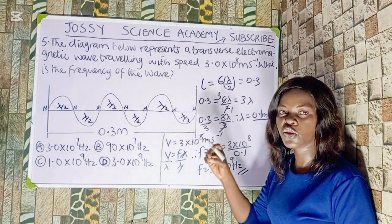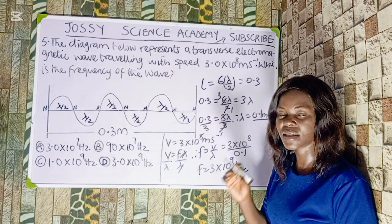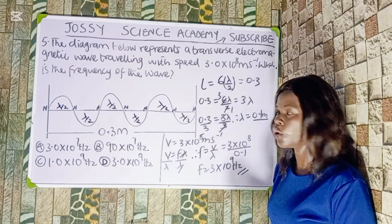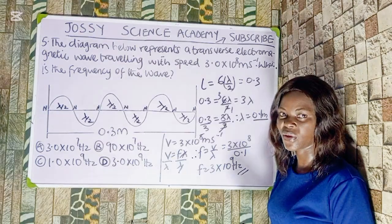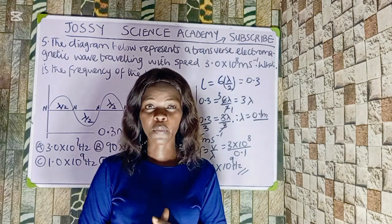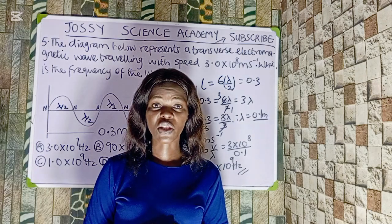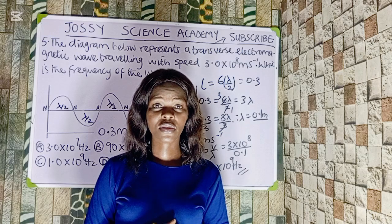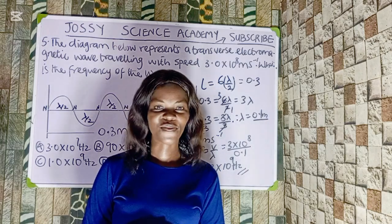Remember that the distance between two adjacent nodes is lambda over 2, and between adjacent antinodes is also lambda over 2. The distance between a node and an antinode is lambda over 4. Thank you for watching. Please subscribe to the channel, turn on notifications, and share so other students preparing for this exam can learn from it. See you next time!